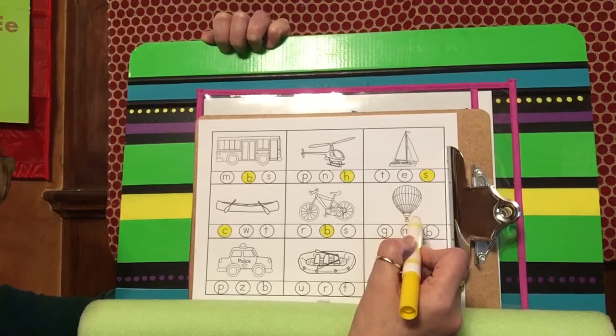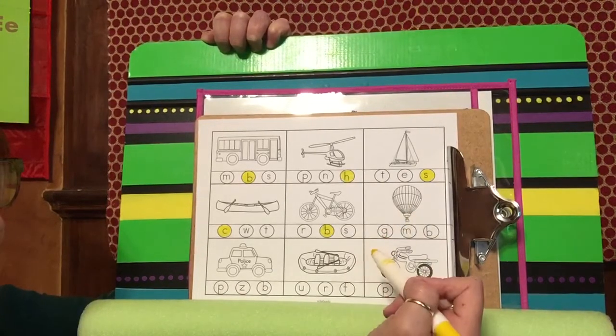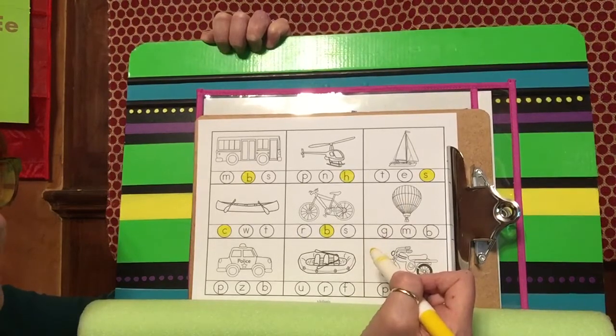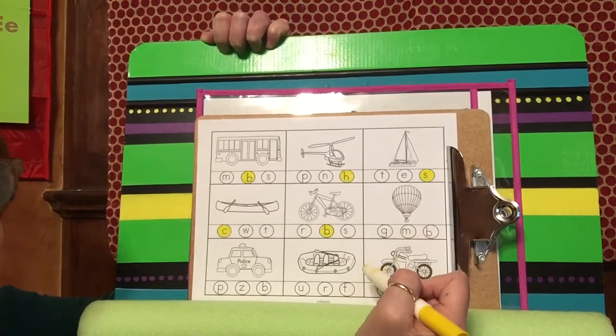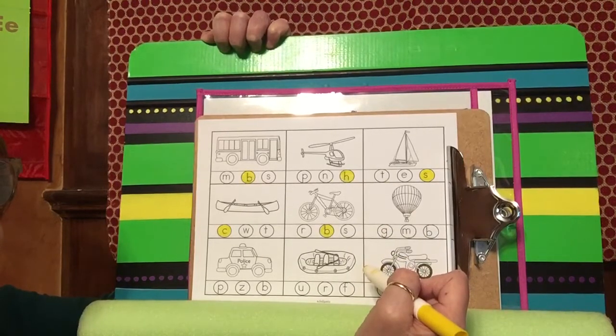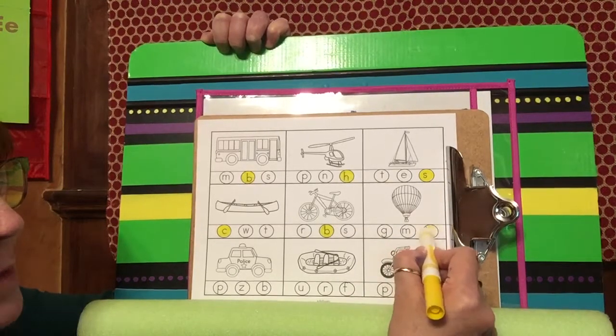This was in our story The Big Trip. Pig was thinking of traveling by air in a hot air balloon. Which letter do you hear at the beginning of balloon? Balloon. You're right, it's our B.